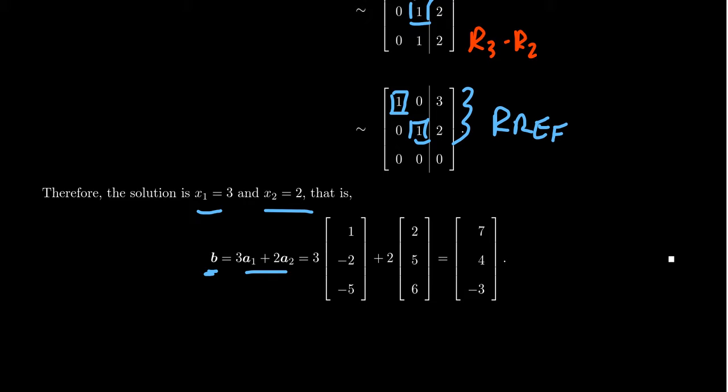And the evidence is here. If you take 3 times the first vector and 2 times the second vector, those will add up to be b. And just to verify that, the first vector was 1, negative 2, negative 5. The second vector was 2, 5, 6. If you take 3 times 1, that's a 3. 2 times 2 is a 4. 3 plus 4 is 7.